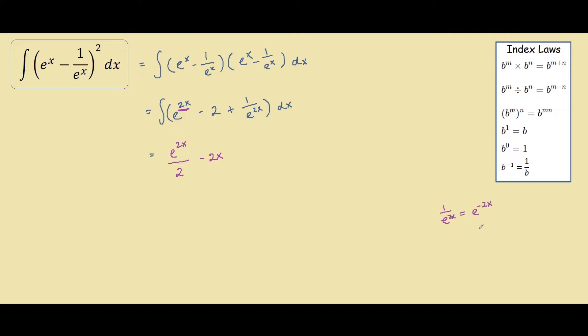So now the same rule is applied. To integrate this term over here, we just divide by the derivative of this term. So we have e^(-2x) divided by negative 2.